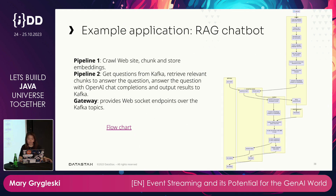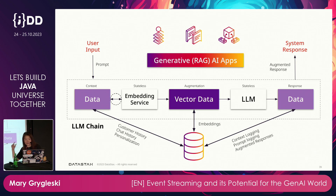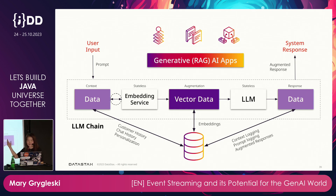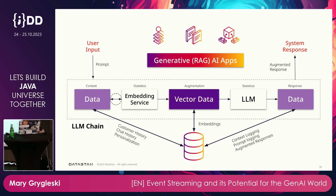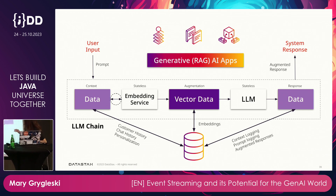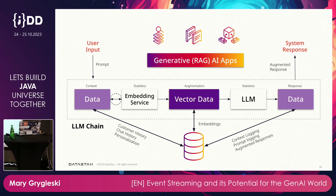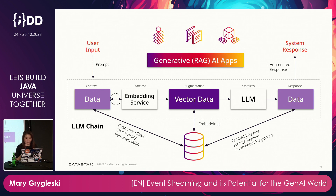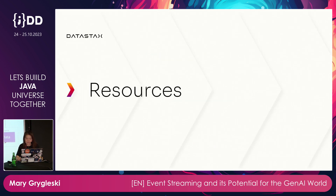Here's an example of a RAG chatbot flow: user input comes in with a prompt, goes through embedding services, gets augmented with vector data and embeddings from the vector database, and then inferencing reads from the database and generates responses. It's a fairly typical data flow for this kind of architecture.